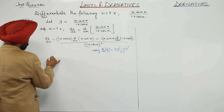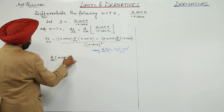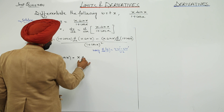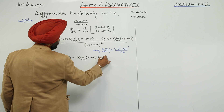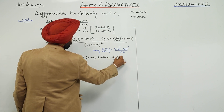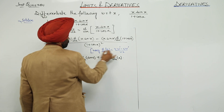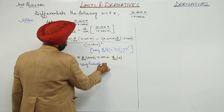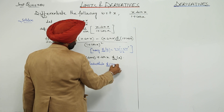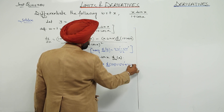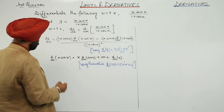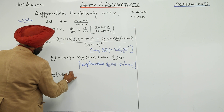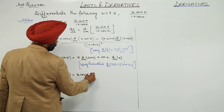d/dx of x·sin(x) — because here it is a double function — using product rule d/dx of u·v equals u as it is times v-derivative plus v as it is times u-derivative. So d/dx of x·sin(x) is equal to x·cos(x) plus sin(x).